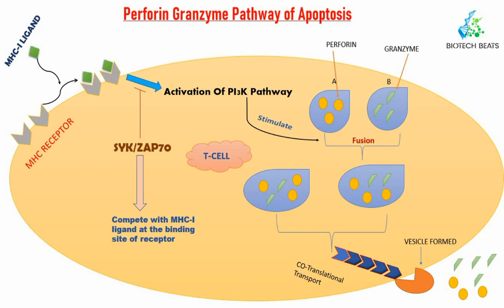Perforin is a pore-forming protein, also known as cytoplasmic granule toxin. Granzyme is a family of structurally similar serine proteases stored within the cytotoxic granules of cytotoxic lymphocytes (CTLs). In humans there are five granzymes: A, B, H, K, and N. In mice there are granzymes A, B, C, D, E, F, G, K, L, M, and N.